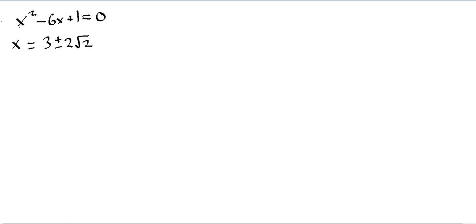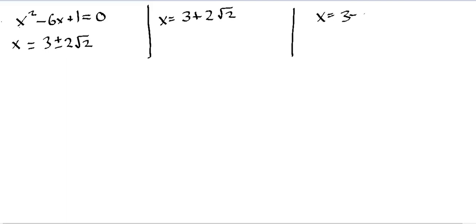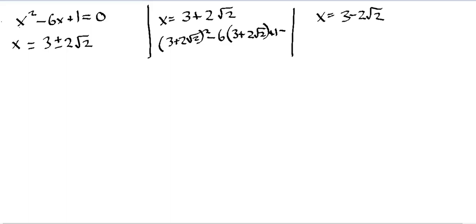Maybe you gave it a try and thought, I'm not sure exactly what to do from whatever step you got to. So, why don't we do it together? What I mean by checking the equation — what is the process of checking the equation to prove that this is a true solution? Let's create two sections of the board. We're going to first check the solution x equals three plus two times the square root of two, and then we'll check x equals three minus two times the square root of two. In our original equation, x squared minus six x plus one equals zero, we substitute for x our solution.